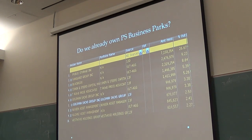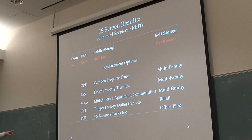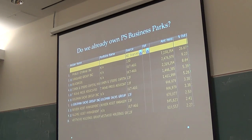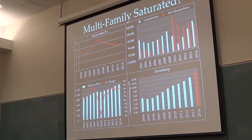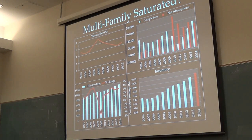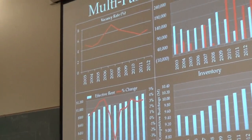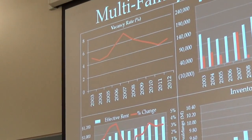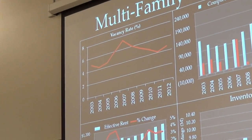Going further into office flex, we already somewhat own PS Business Parks — Public Storage actually owns 26% of PS Business Parks, so that somewhat made our job easier since we already had exposure to this company. Moving on, we had to decide between multi-family and retail. We somewhat decided that multi-family has been saturated based on our research and input from our professor. The vacancy rate for multi-family has trended down since the 2007-2008 recession, but at the last portion there's a slight uptick, which is possibly indicative of vacancies increasing — bad for multi-family.